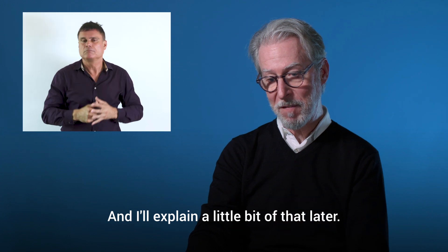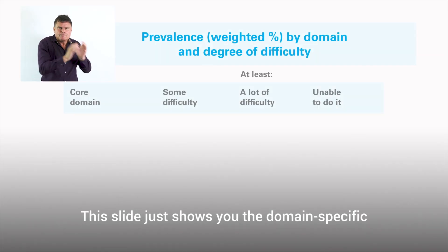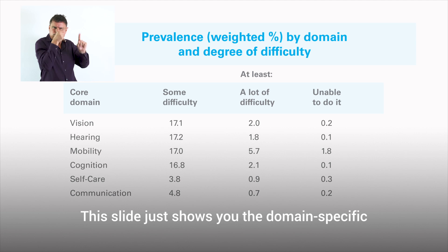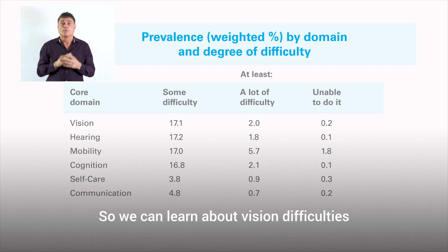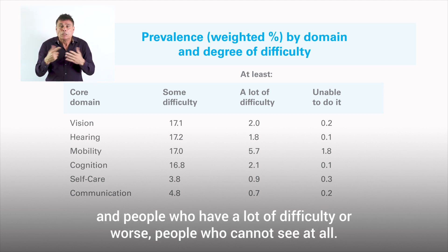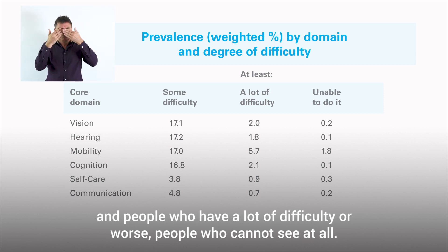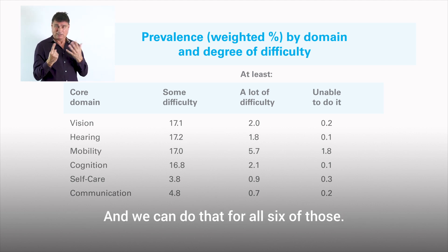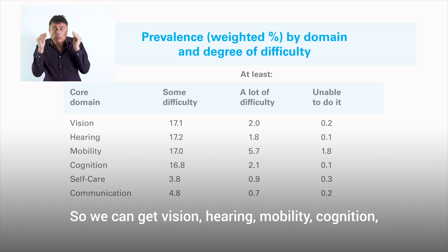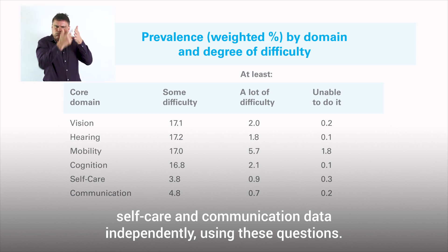This slide shows you the domain-specific information we can get by asking these six questions. We can learn about vision difficulties — people who have a lot of difficulty or worse, people who cannot see at all, or people who just have some difficulty or worse — and we can do that for all six domains: vision, hearing, mobility, cognition, self-care, and communication, independently using these questions.